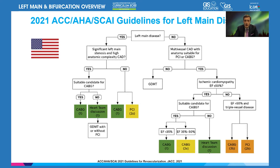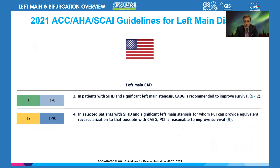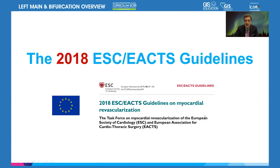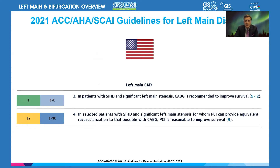As an overview of the guideline: for patients with ischemic heart disease and left main stenosis, CABG is recommended for improvement of survival as a class one indication, and PCI is indicated as class 2A for patients with significant left main stenosis who are possible for CABG but may also have reasonable results with PCI. This is the type of discussion we always have in our heart team.